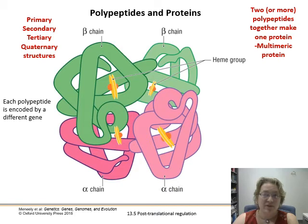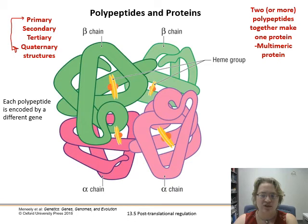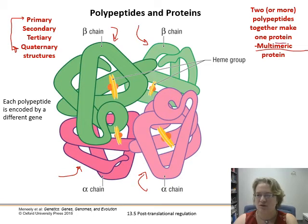A polypeptide is a long chain of amino acids, but it's not really a protein until it folds itself up into the shape it needs to do its job. Just to review: we still have the primary, secondary, tertiary, and quaternary structures. Primary is the amino acid chain. Secondary is the initial folds between the chain. Tertiary is larger structures. Quaternary is when different polypeptide pieces come together to form a protein — like beta globulin shown here with its heme groups. Two or more polypeptides together making a protein is called a multimeric protein, with individual subunits called monomers.